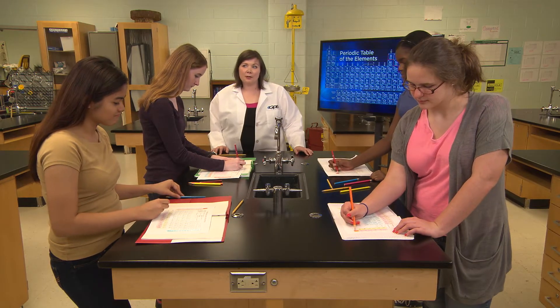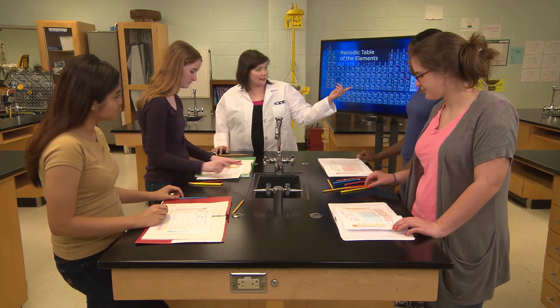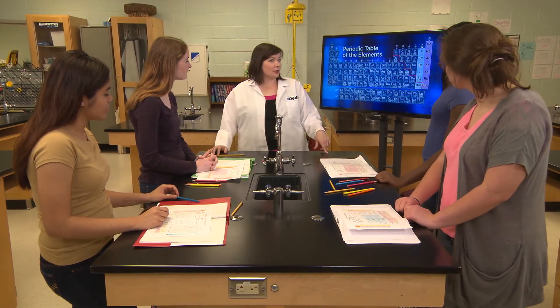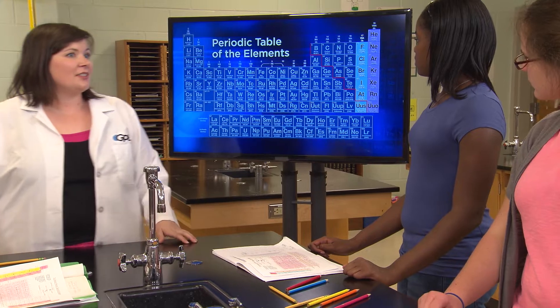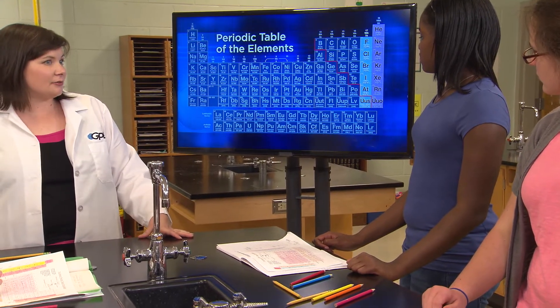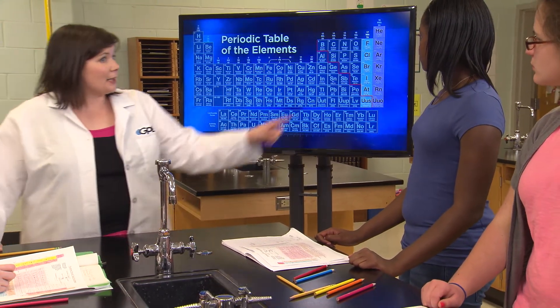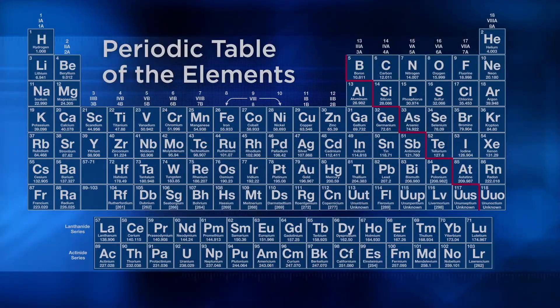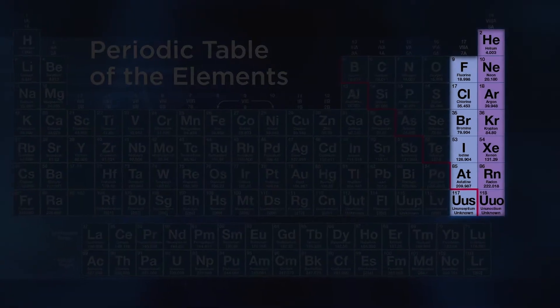Two special groups of non-metals are the halogens and the noble gases. Hydrogen has properties similar to the halogens, which are column 17. These non-metals are very reactive. Column 18, the noble gases, they're not reactive at all. Pick new colors and color columns 17 and 18 now.